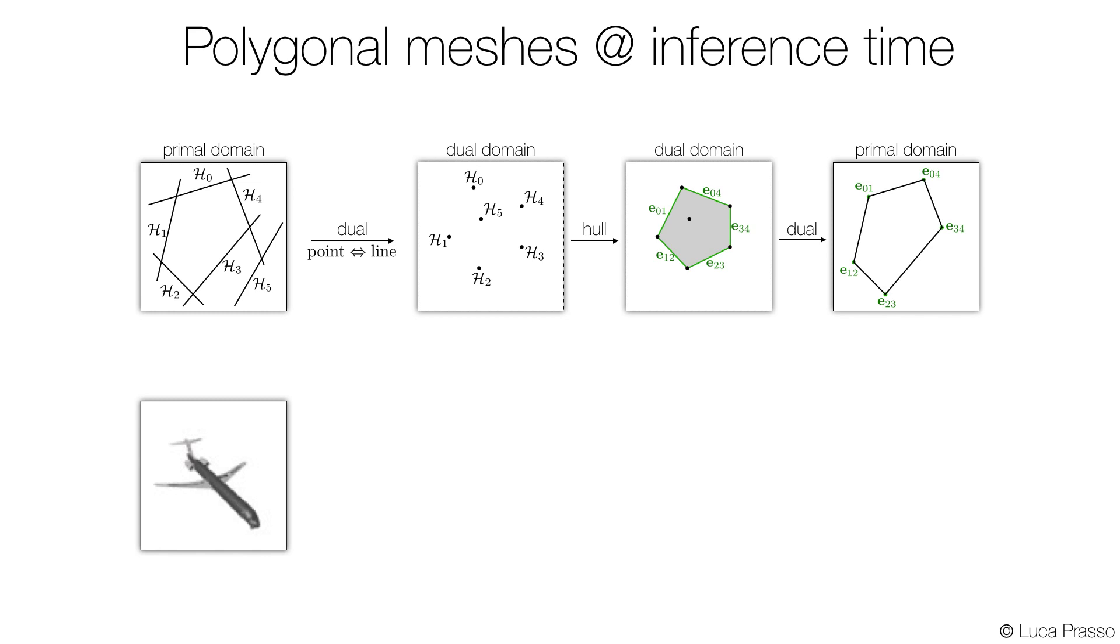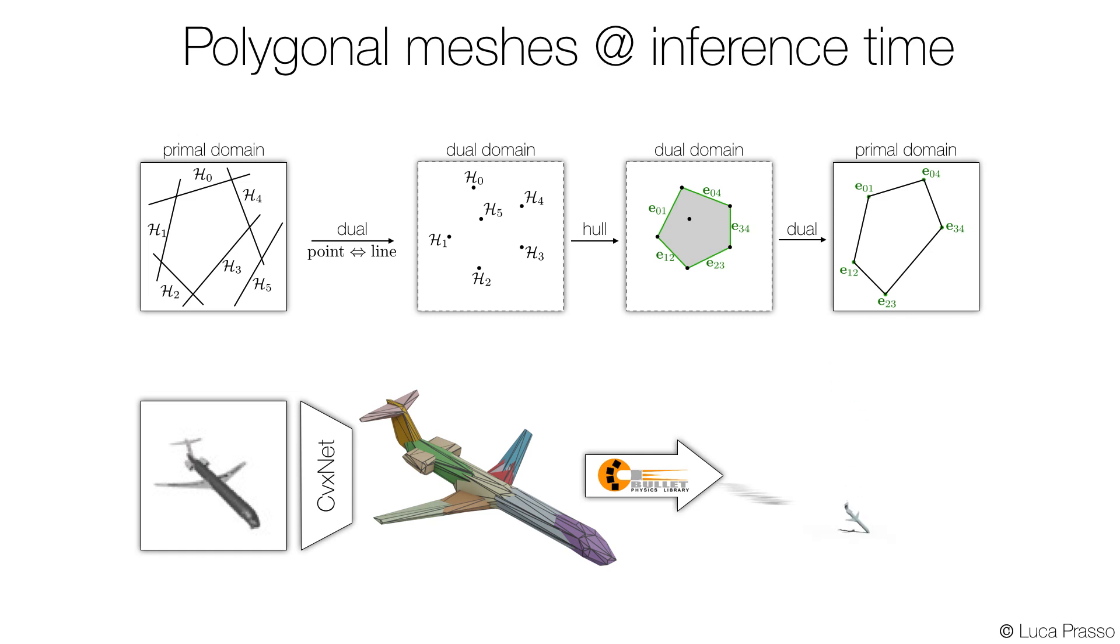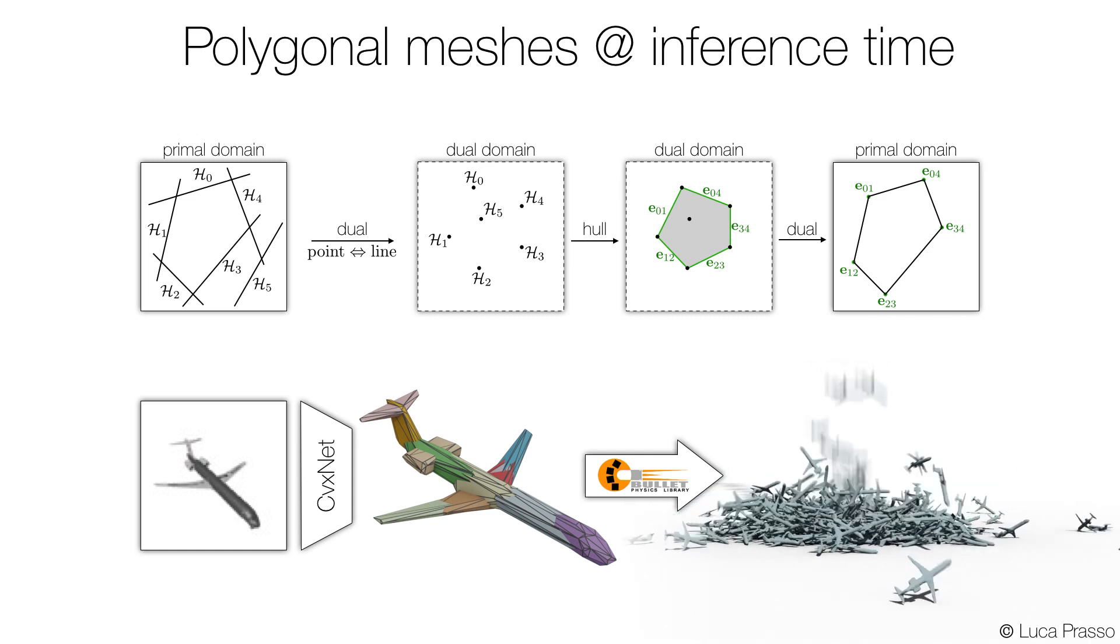This means that our network can take an image as input and generate a model that is directly usable in traditional graphics pipelines. As an example, here we show a real-time rigid body simulation.